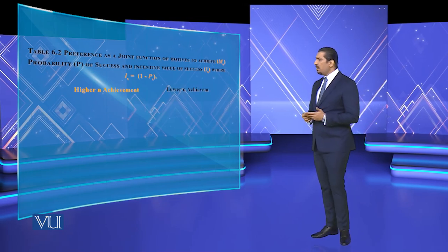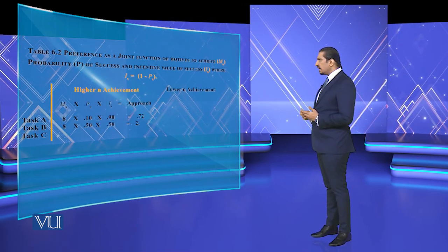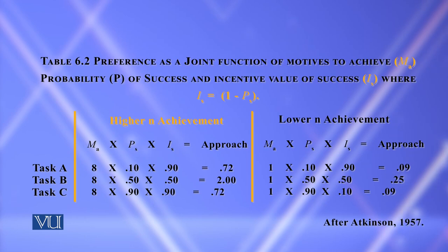You have to forecast your judgments on the basis of factual analysis. Here we can see a model — we can see the interaction of n-Achievement and risk-taking. We can see preference as a joint function of motives to achieve, the probability, and the incentive value of success.